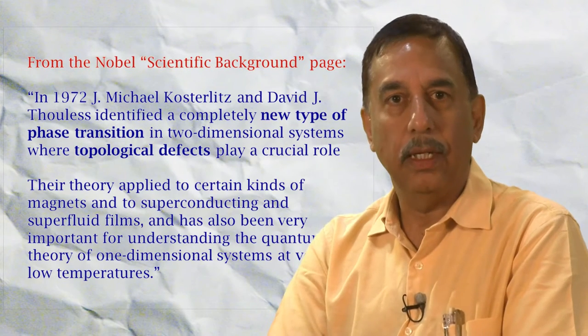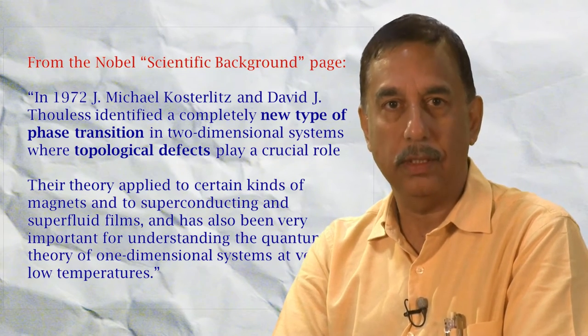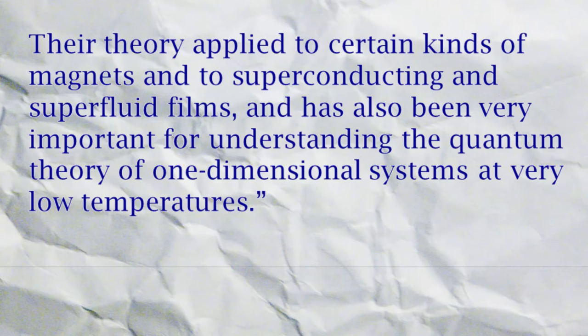These defects are called Kosterlitz-Thouless vortices. Their theory applies to certain kinds of magnets, to superconducting and superfluid films, and has also been very important for understanding quantum phase transitions in one-dimensional systems.